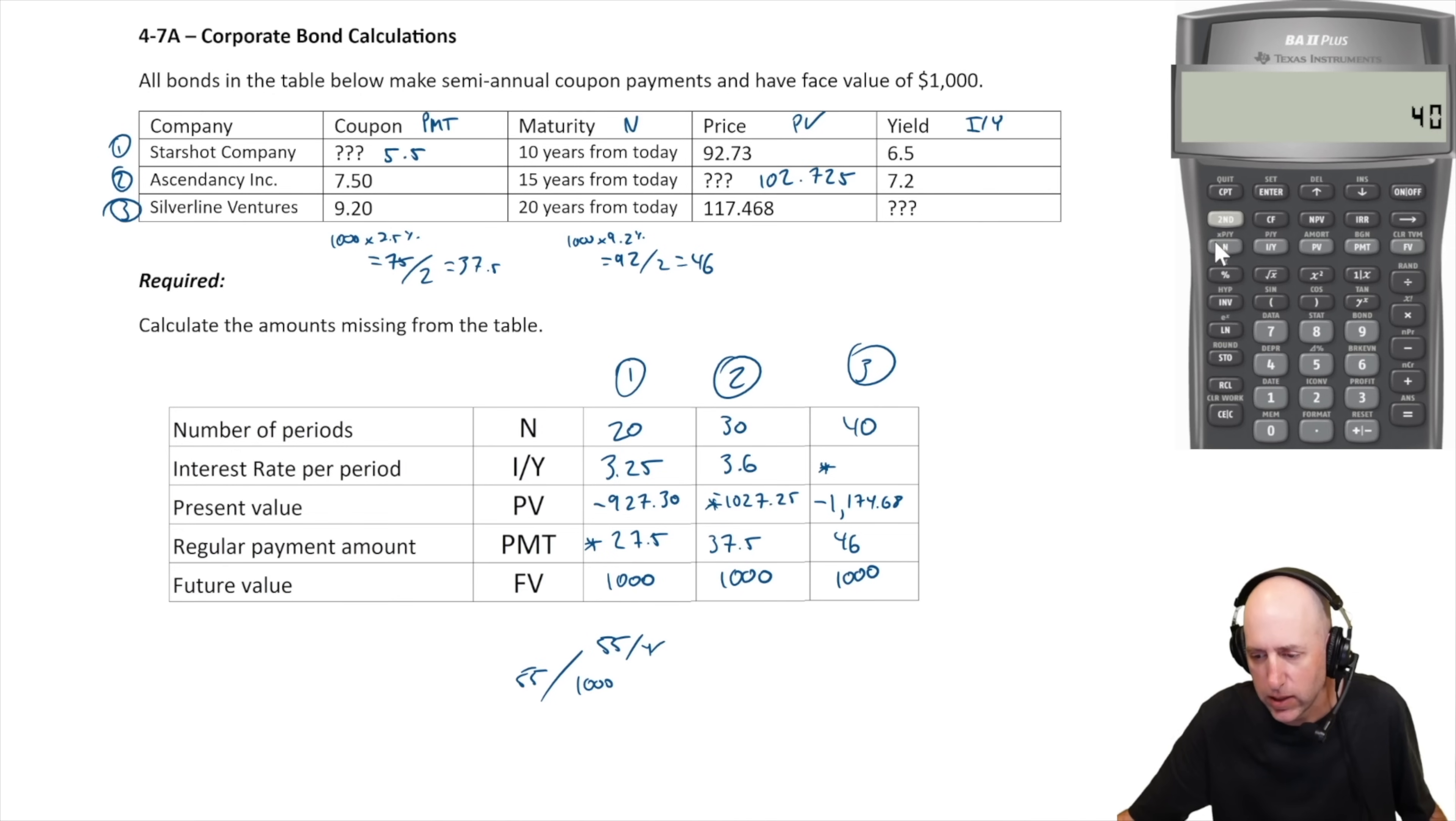40 goes in as N, negative $1,174.68 goes in as PV, $46 goes in as PMT, $1000 goes in as FV. And now I compute I/Y: 3.75.